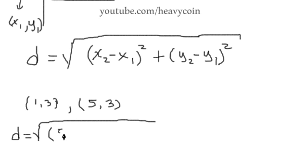so this would be 5 minus 1 squared plus 3. 3, what do we got here? 3 minus 3, 1,3, 5,3.